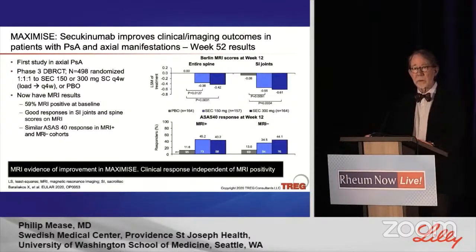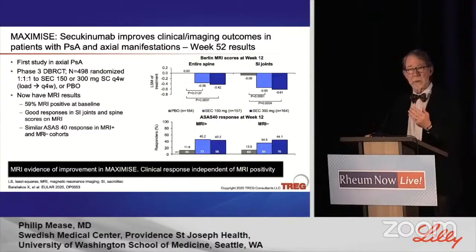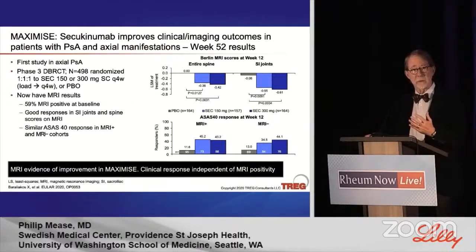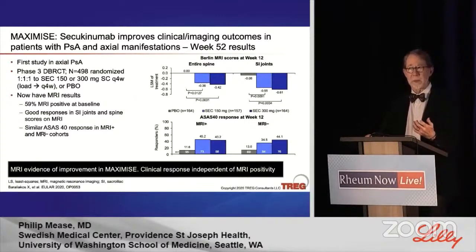Fascinatingly, only about 60 percent of patients who entered had MRI abnormalities consistent with spondylitis — 40 percent did not. Yet when you looked at results, not only did MRI-positive patients have the improvements we'd expect in both spine and joints from an effective therapy, but MRI-positive and MRI-negative patients also responded similarly. So the drug works regardless of MRI status, but this poses a challenge for developing classification criteria for axial PsA.